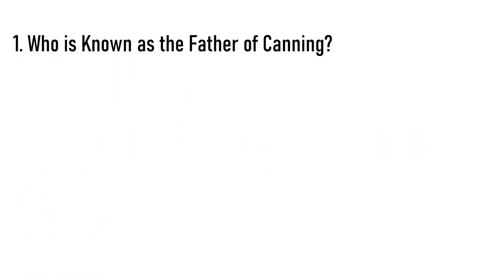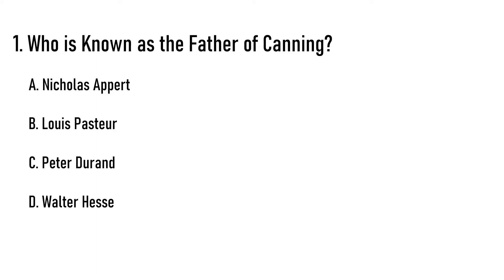First question: Who is known as the father of canning? Options are: A) Nicholas Appert, B) Louis Pasher, C) Peter Duran, D) Walter Hesse. The correct answer is option A, Nicholas Appert.